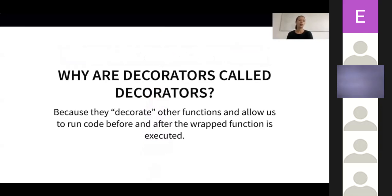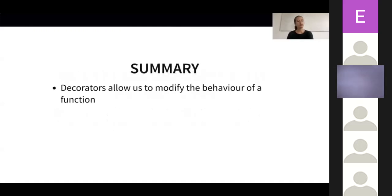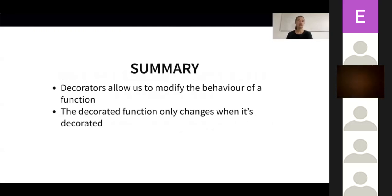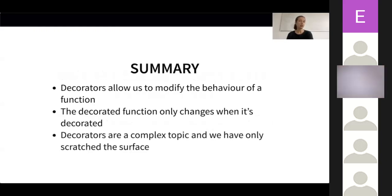We call them decorators because they decorate other functions and allow us to run code before and after the wrapped function is executed without permanently modifying its behavior. As a quick summary, we learned that decorators allow us to modify the behavior of a function. The decorated function only changes its behavior when it's decorated. For example, you could implement a decorator that determines how much time it takes for a function to run, use it during development to time various parts of your codebase, and then remove the decorator once all the optimization is done. Decorators are a complex topic and we have only scratched the surface.